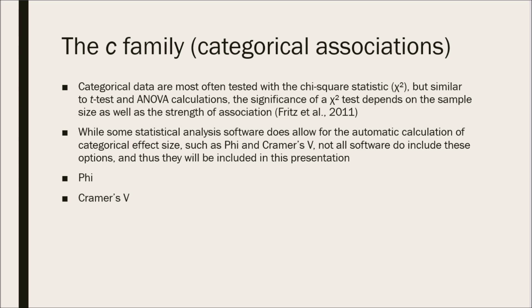While some statistical analysis software does allow for the automatic calculation of categorical effect sizes such as Phi and Cramer's V, not all software include these options and thus they will be included in this series.